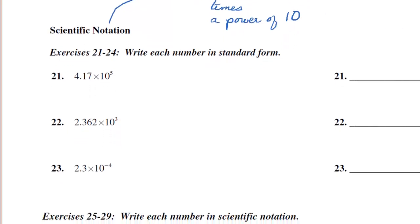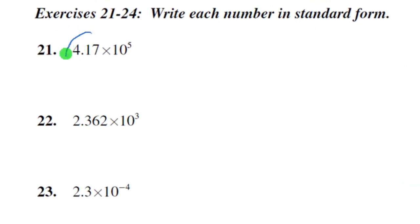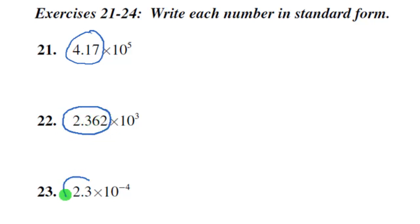If you look at the first three problems we have here, they are already in scientific notation. Notice that we have a number that's between 1 and 10. In this example we have 4.17, in this example we have 2.362, and in this example we have 2.3. This number is between 1 and 10 and it's multiplied times a power of 10, 10 to some exponent. If the exponent is positive, then this number in scientific notation represents a large number.